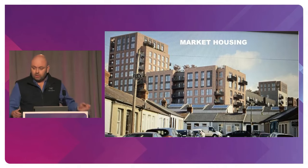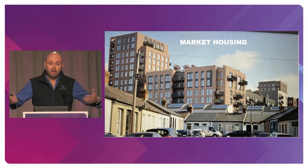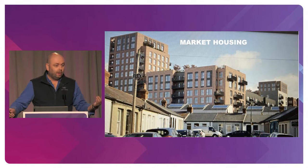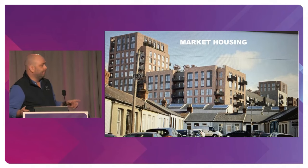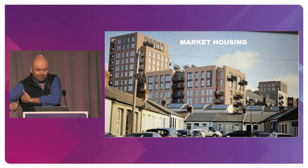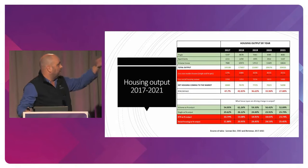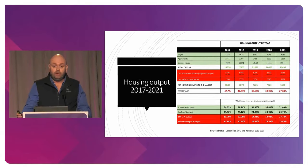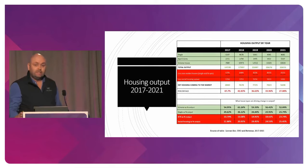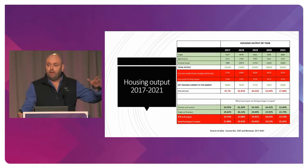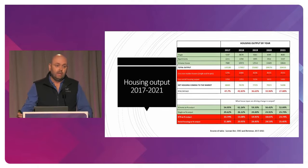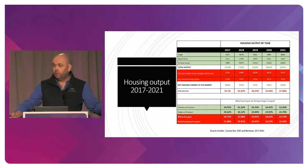Market housing — this is one I really like. What's coming to the market means: what is there for ordinary people to buy every year, as a first-time buyer or second-time buyer, as a new house? Across the top in the grey line are how many houses we're building every year — single houses, typically one-offs; apartments; and what the CSO calls scheme houses, which are housing estates. Total output has gone from 14,500 to nearly 20,500 last year, so total output has gone up by 43%. But how much of that actually comes to the market?